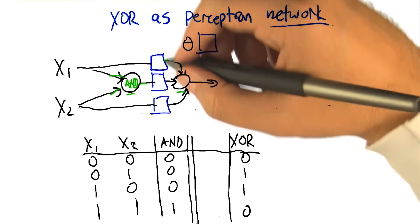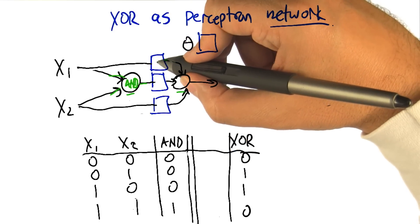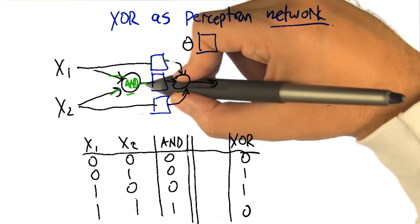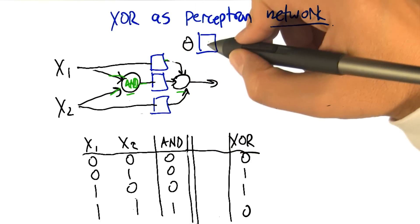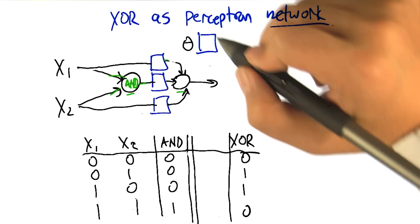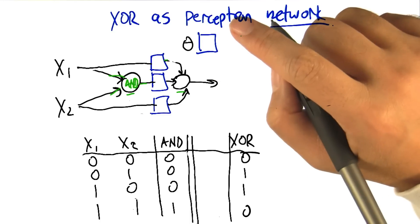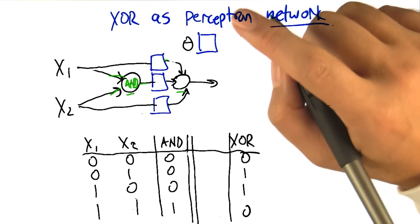So what we'd like you to do is figure out how to do that. How do you set this weight that is the input of X1, this weight which is the AND input, and this weight which is the X2 input, and the threshold, so that it's going to actually compute an XOR. And just so you know, this is not a trick question. You really can do it this time.